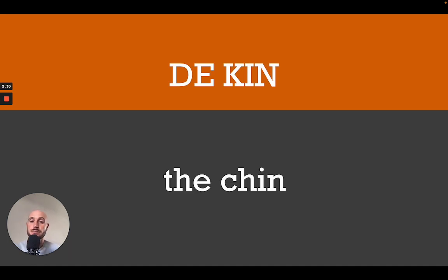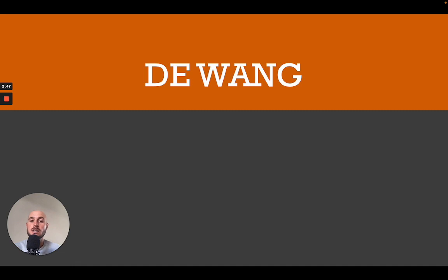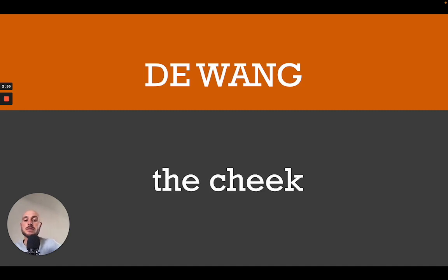We go to the next one: de kin. De kin — close to English, it's basically the chin. We continue to the next one, which is exactly the same as in English: de lip — the lip. Then we go to de wang. De wang — the ng sound in Dutch is just like in English: wing, thing, sing, and so on. De wang — that would be the cheek.